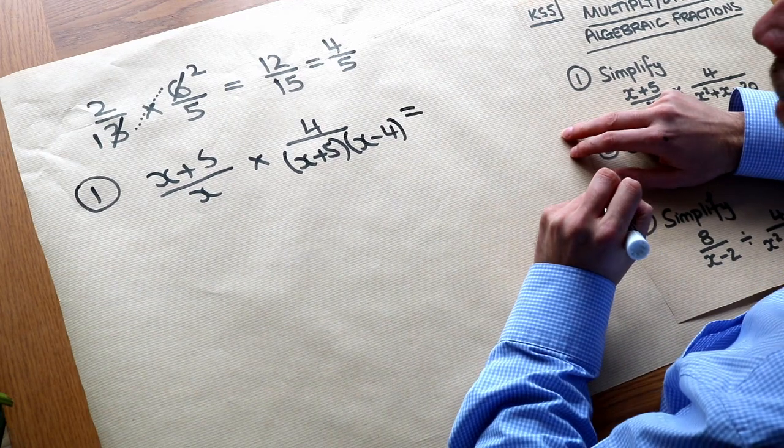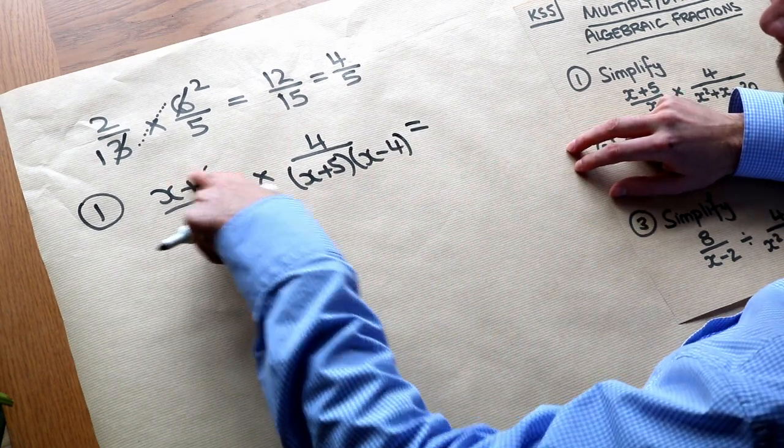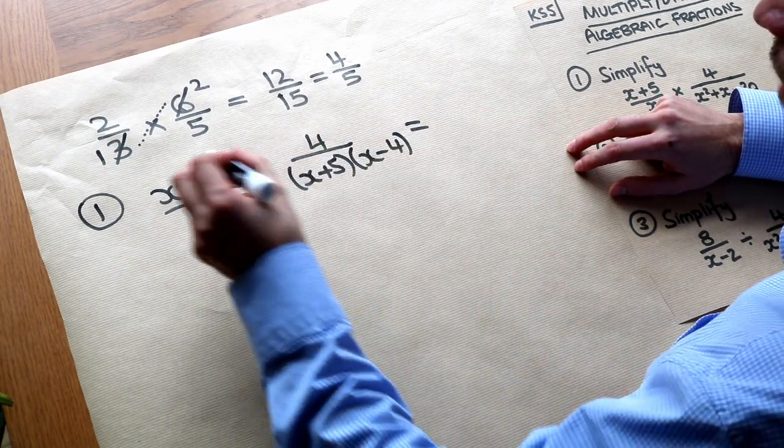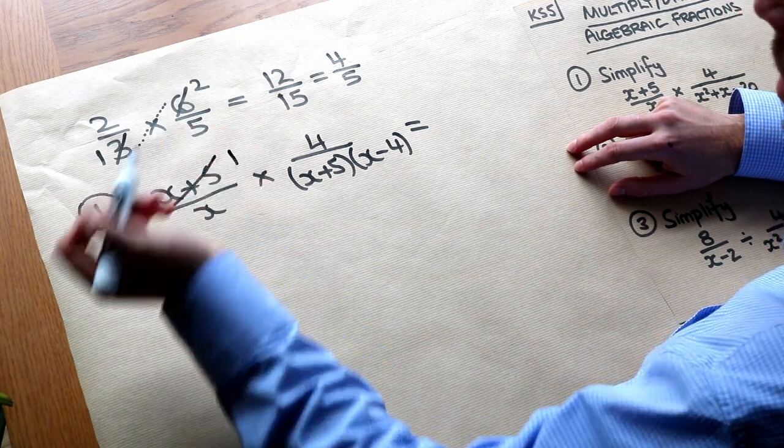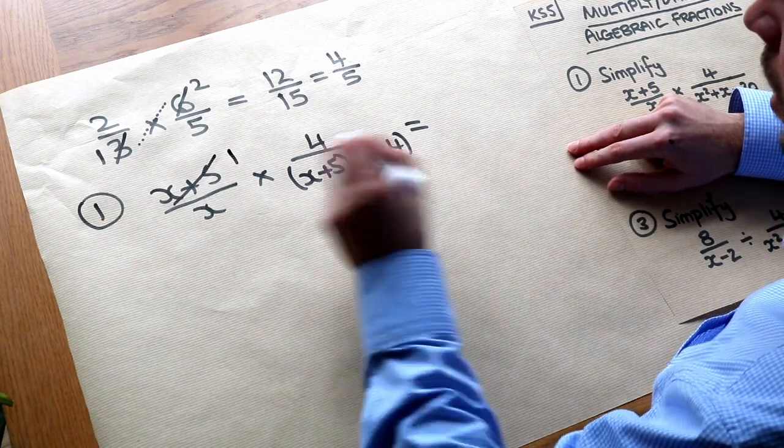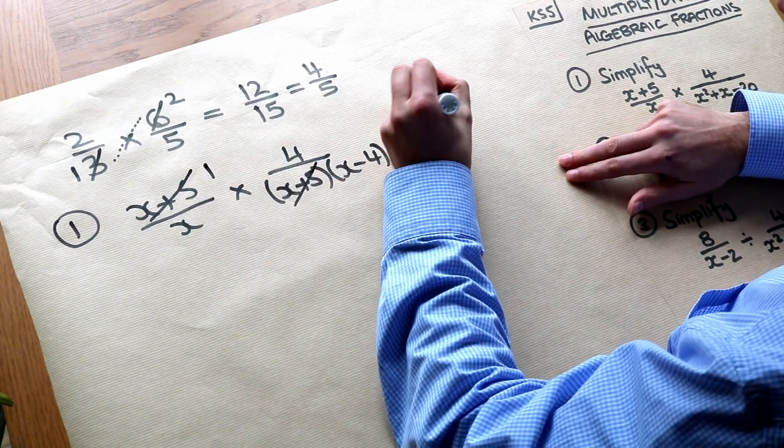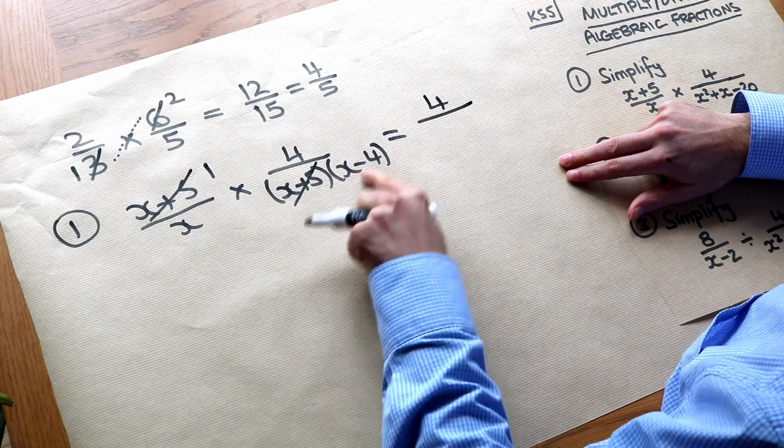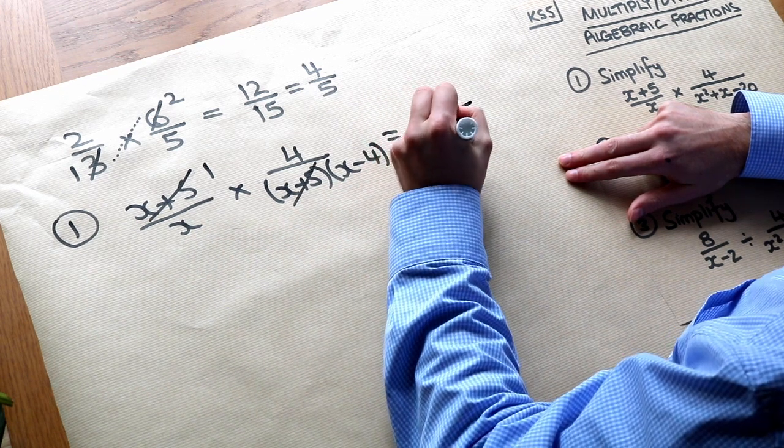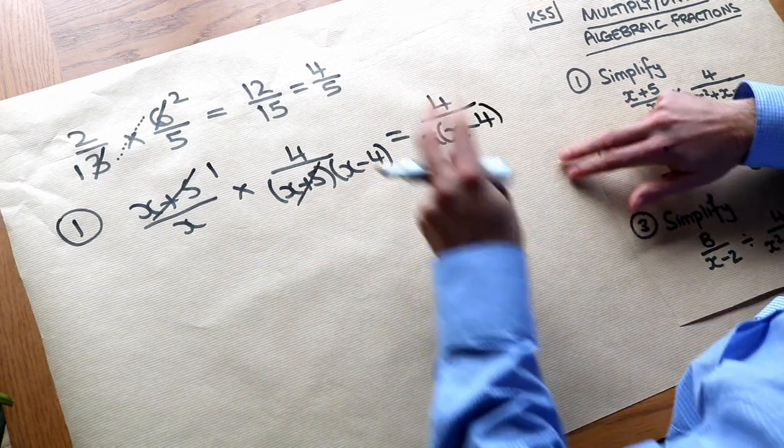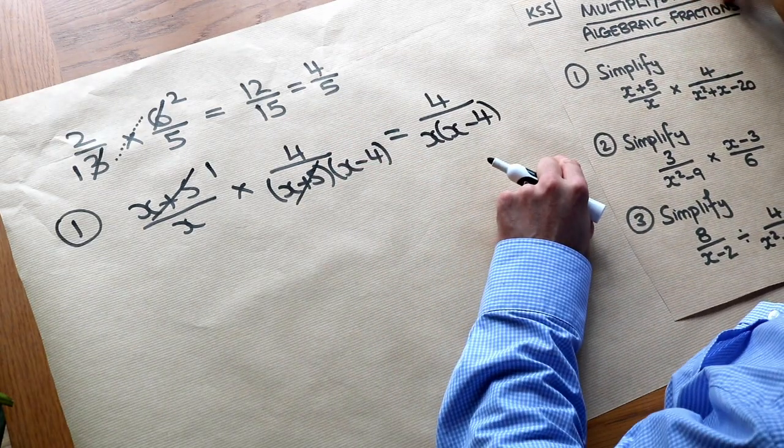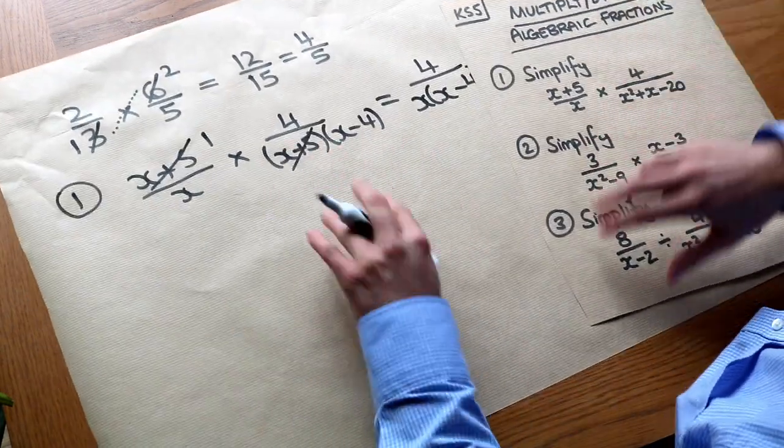Now can you see that we have a common factor diagonally here of x plus 5? So we could cross that out and just replace it with 1, because x plus 5 divided by x plus 5 is just 1, and we can cross that out. And that leaves 1 times 4 which is 4 over x times x minus 4, which is x brackets x minus 4. And there's no need to expand that bracket out at the bottom, we can just leave it factorized and that's absolutely fine.